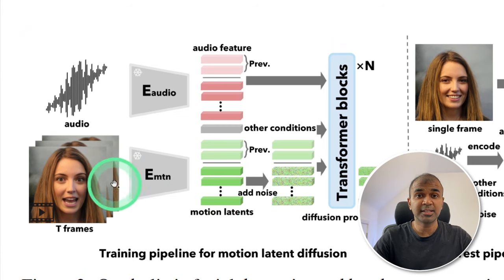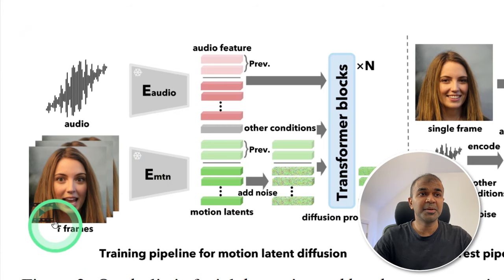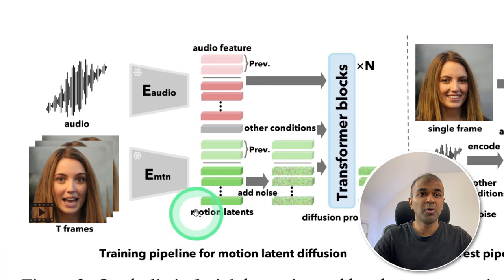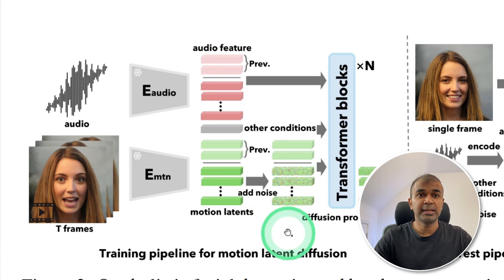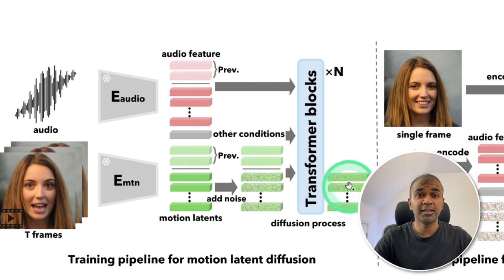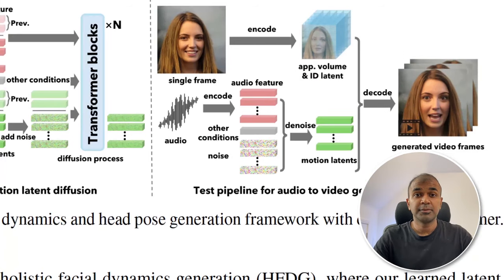This is how the model is getting trained. First, an image and an audio are sent in. Audio features and motion latency are extracted. Next, noise is added, similar to a diffusion model, and finally we get the trained model.